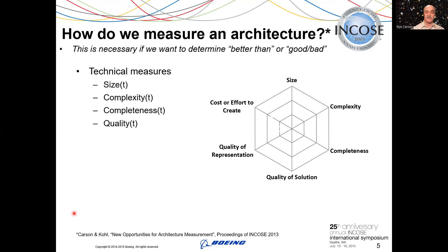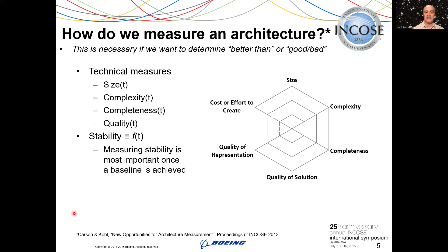How do we measure an architecture? This was first discussed in the paper I did with Paul Cole, first presented at the NDIA conference in 2012 and then at the INCOSE Symposium in 2013. We had several categories — we need to be able to measure if we want to differentiate among architectures or determine better versus worse. We proposed several technical measures related to size and complexity, completeness, and quality — both quality of the representation and quality of the solution. Note that functionality has a dependency on time, because stability ends up being a very important factor once a baseline is achieved.